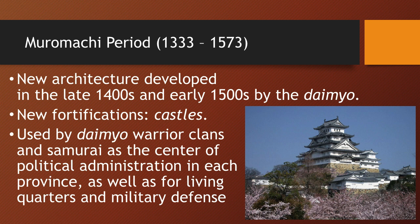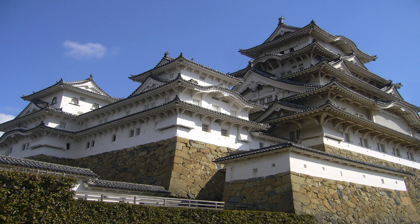In the late 1400s and early 1500s, the Daimyo developed new styles of architecture. This is where we see the birth of the Japanese castle, or Oshiro. These castles served as the center of political administration for each province — like the White House for that province — where the Daimyo lived and ruled. They were also places of military defense. If you wanted to conquer a province, you had to take over its castle, because that's where the political center and the Daimyo family were.